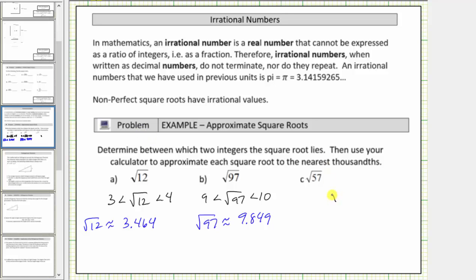The last example, we have the square root of 57. Because the square root of 49 equals seven and the square root of 64 equals eight, because 57 is between 49 and 64, we know the square root of 57 is between seven and eight.